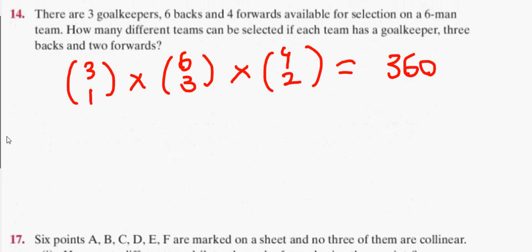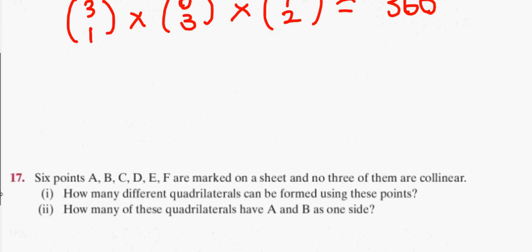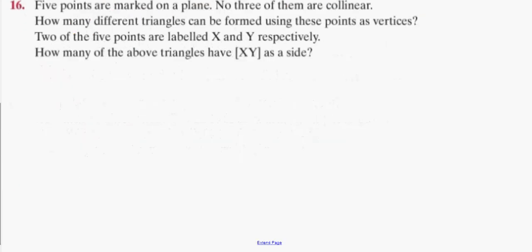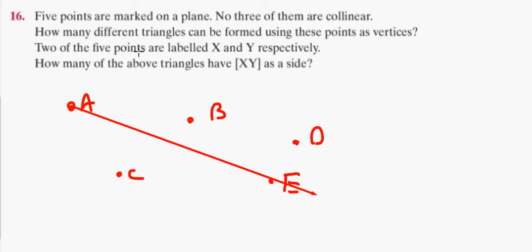Okay, question 16. Five points are marked on the plane. No three of them are collinear. So you have A, B, C, D, E. What collinear means is that I can't put three of them on the same line as each other. So no three of them are collinear, which means when I draw a line, I'll only ever go through two of them, not three of them. That's basically the question.